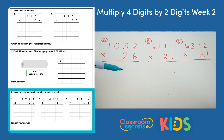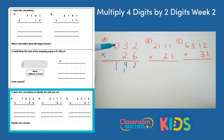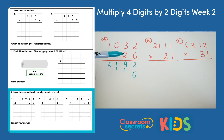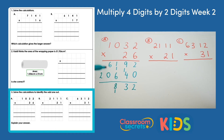Calculation A: 1032 multiplied by 26. 6 times 2 is 12. 6 times 3 is 18 plus 1 is 19. 6 times 0 is 0 plus 1 is 1. And 6 times 1 is 6. We're multiplying by our tens number, so we need to put a 0 in the ones column. 2 times 2 is 4. 2 times 3 is 6. 2 times 0 is 0. And 2 times 1 is 2. Adding together: 2 and 0 is 2. 9 and 4 is 13. 6 and 1 is 7, add 1 more is 8. 6 and 0 is 6. And 2 add nothing is 2. So the answer to this calculation is 26,832.